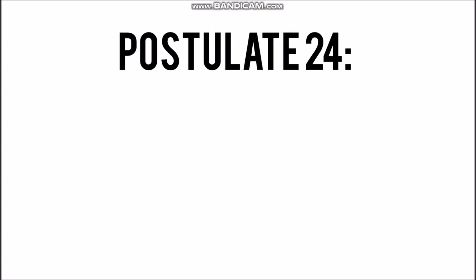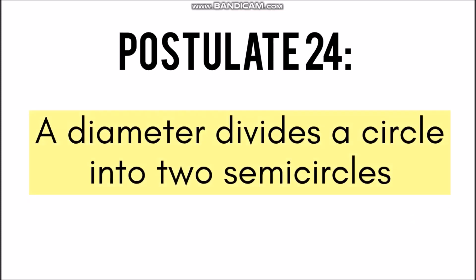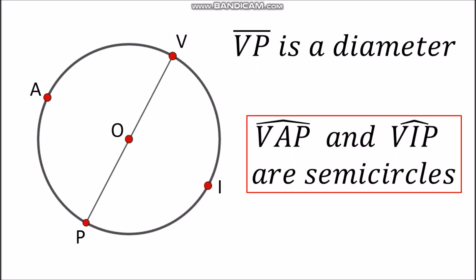Next is we have postulate 24. This states that the diameter divides a circle into two semicircles. So let's say you have here a circle O and VP is a diameter, or segment VP is a diameter. Now applying postulate 24, whenever you have a diameter, that means there will be two semicircles formed.